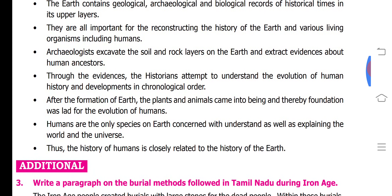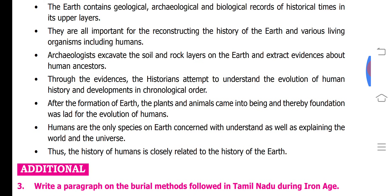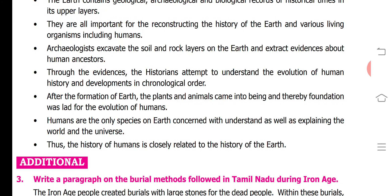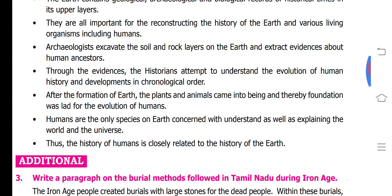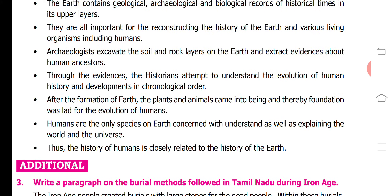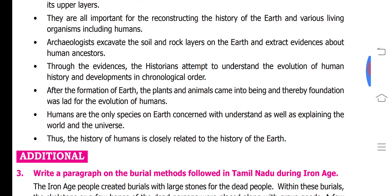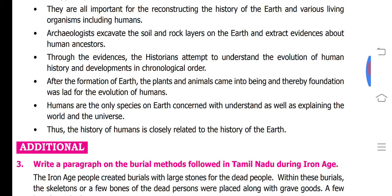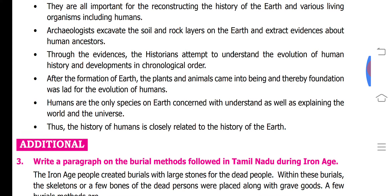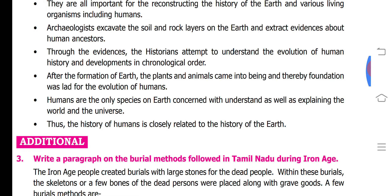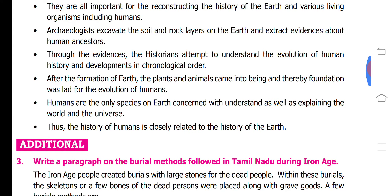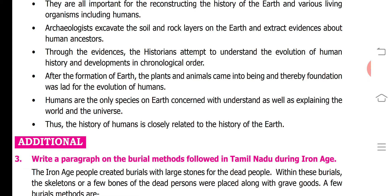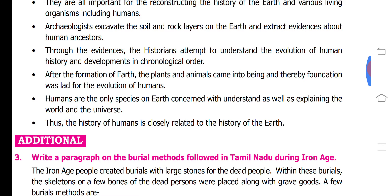From geological and biological evidences, we know that humans of ancient periods evolved and had very significant development in their growth. After the formation of the earth, plants and animals came into being, laying the foundation for the evolution of humans. History tells us that humans were first in the shape of a monkey, then evolved into other shapes, started walking, and finally became modern humans.